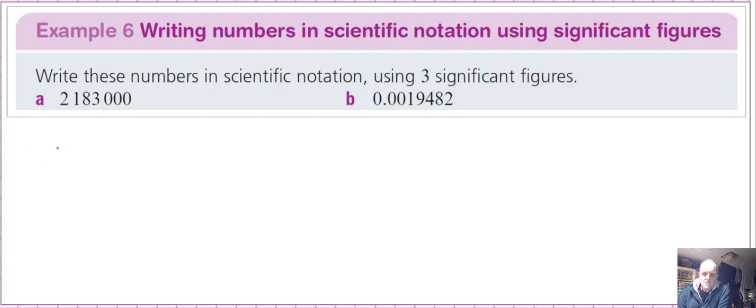Scientific notation requires a number at the beginning between 1 and 10, but it can't be 10. Basically you have one digit followed by a decimal point and then some other digits. Then you multiply that by 10 raised to the power of a positive or negative number depending on how many places you've moved the decimal point.